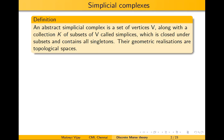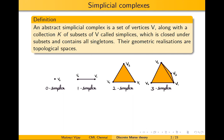An abstract simplicial complex is a collection of vertices and a collection of their subsets called simplices. If some subset is there, all their subsets are there and all singletons are simplices. The realizations of these simplicial complexes are topological spaces. Here is the one simplex, the zero simplex, the two simplex, and the three simplex. Simplicial complexes are made up of these building blocks.